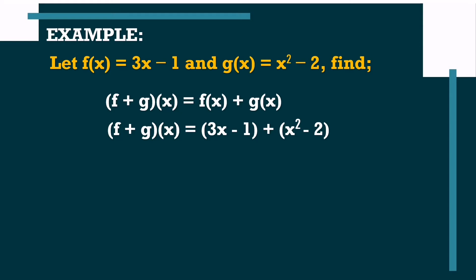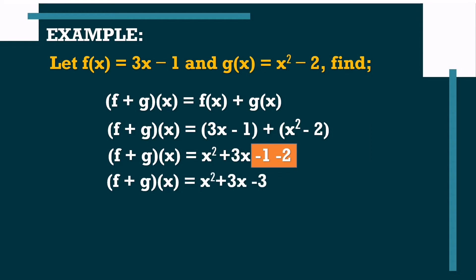This time, we are going to arrange the terms beginning with the term with the highest exponent. So, f plus g of x is equal to x squared plus 3x minus 1 minus 2. Now, we need to combine similar terms. Similar terms are those terms with the same variables and exponents. In this case, the terms that are similar are only negative 1 and negative 2, because x squared and 3x have different exponents. So, negative 1 minus 2 is equal to negative 3. Therefore, the sum of the two functions is f plus g of x is equal to x squared plus 3x minus 3.